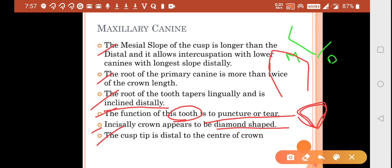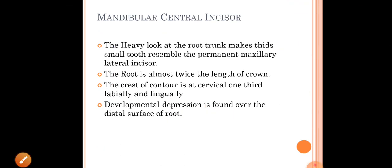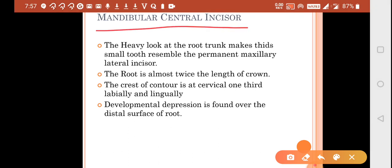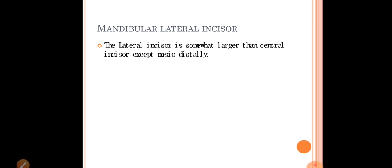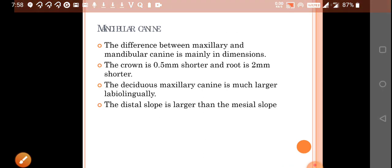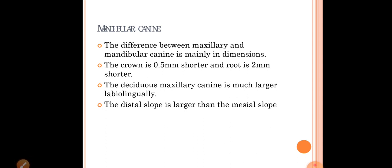The root of the mandibular central incisor is almost twice the length of the crown. This is the first tooth to erupt in the oral cavity, at around six months. The crest of contour at the cervical third is highest labially and lingually. A developmental depression is found over the distal surface of the root. Normally lateral incisors are smaller than central incisors, but the mandibular lateral incisor is somewhat larger than the mandibular central incisor.